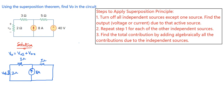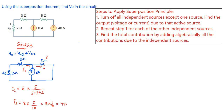Our goal here is to find V01. We can use the current division rule. Assuming the current coming in is I and the branch current through the 2Ω and 3Ω is I1, we get: I1 = 8 × 5 / (5 + 3 + 2) = 8 × 5 / 10 = 8 × 0.5 = 4 amperes. So V01 = 2 × 4 = 8 volts.